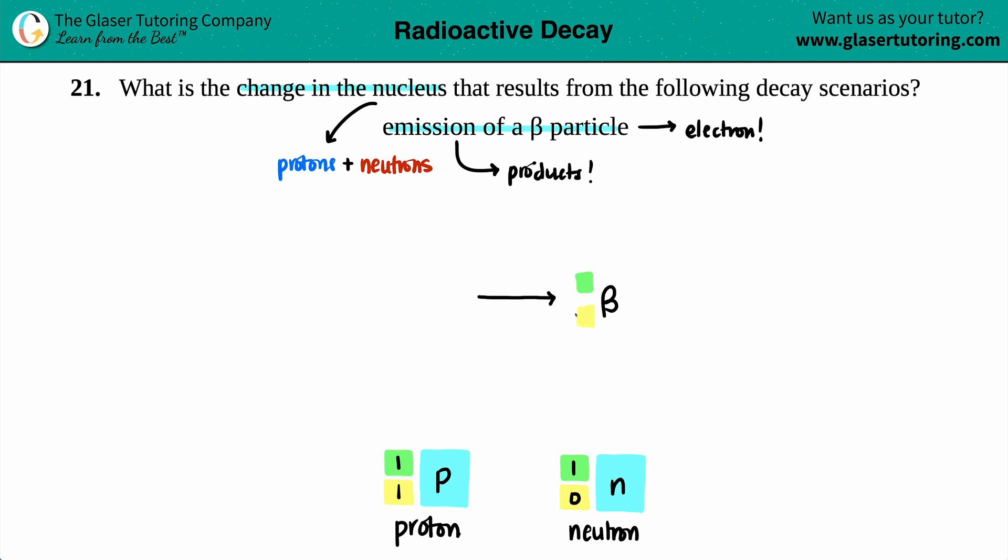A beta charge is a negative one. And since it has nothing to do with the nucleus, it does not have an atomic mass. So it's a zero value. All right. So now what I've done is maybe we'll just say that this is the beta.